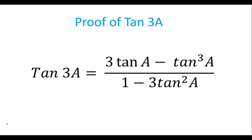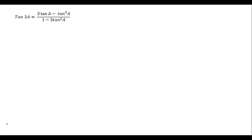So let's begin. We want to prove that tan 3a is equal to 3 tan a minus tan cube a, all divided by 1 minus 3 tan squared a. Proof.